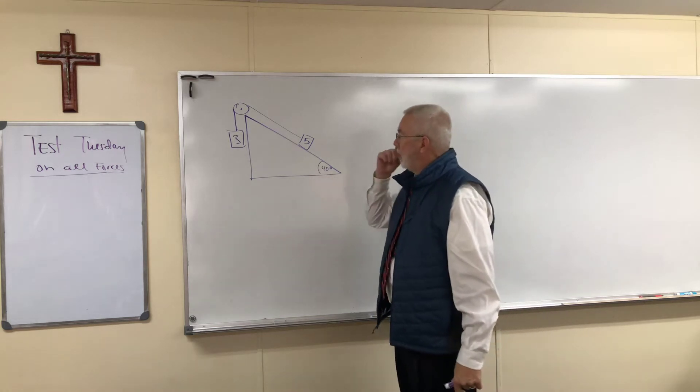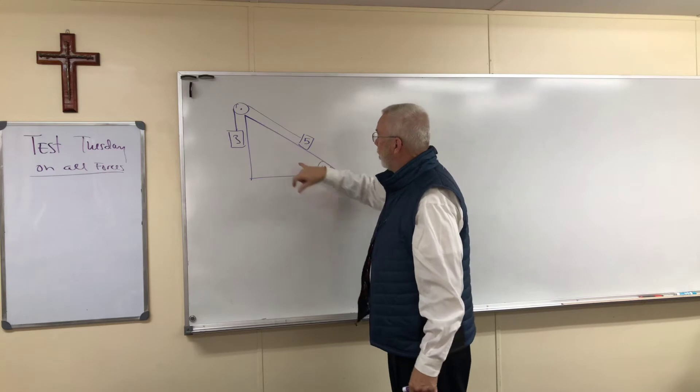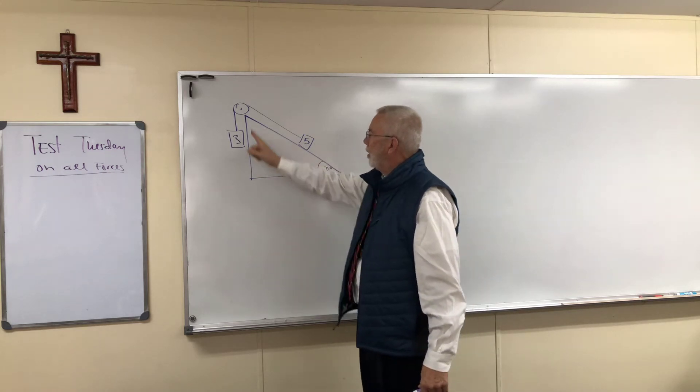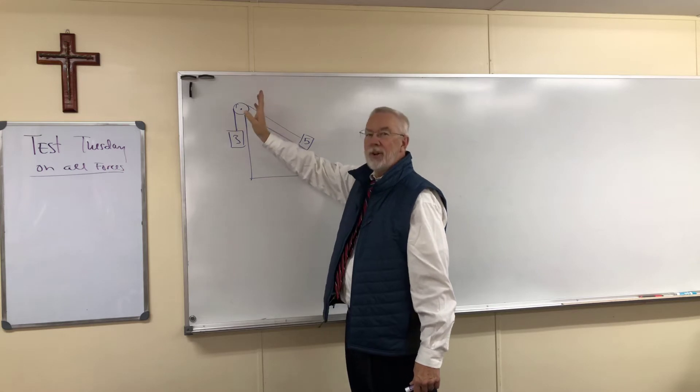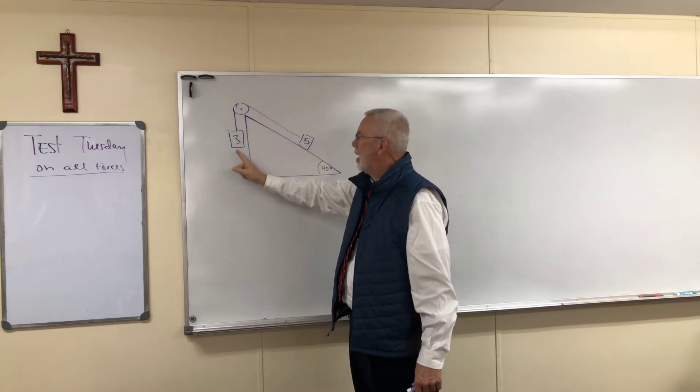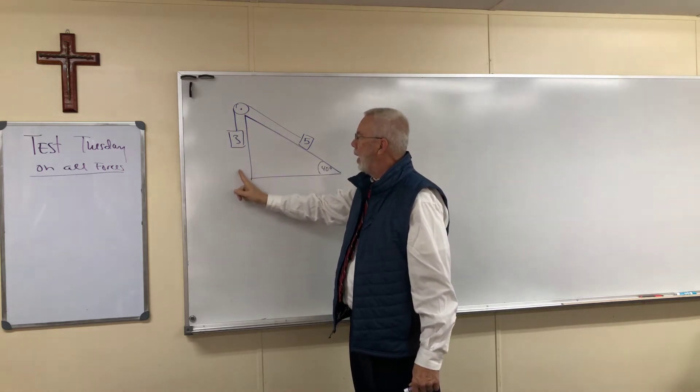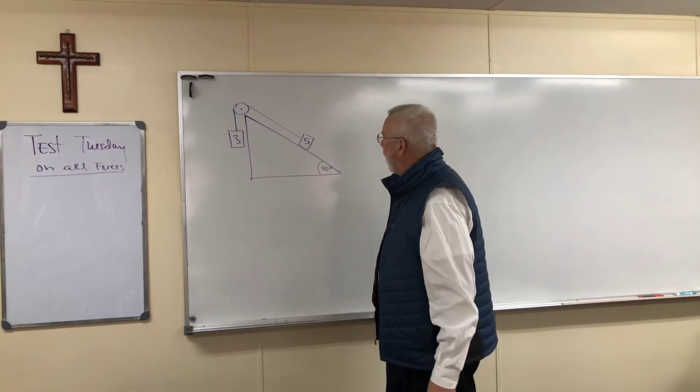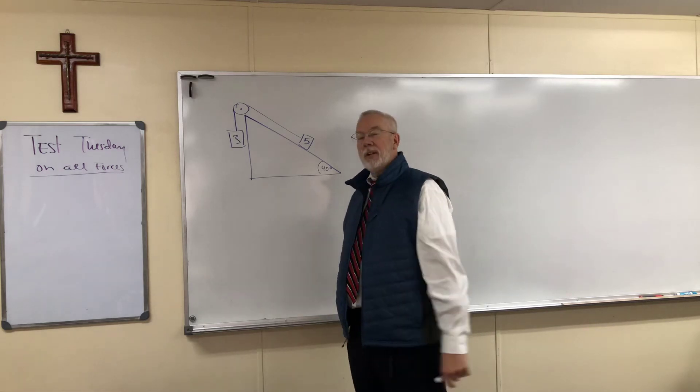So I've got a problem up here on the board that shows an incline plane which has a 40 degree angle and there's the pulley which is the characteristic of those Atwood devices. You've got a three kilogram weight hanging off the side of the incline and you've got a five kilogram weight that is sitting on the incline.